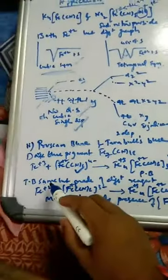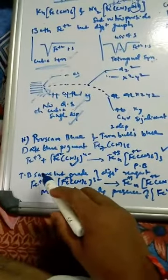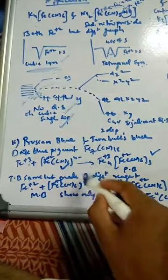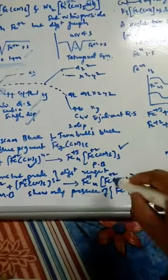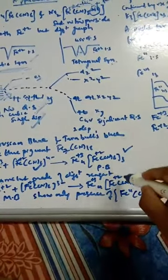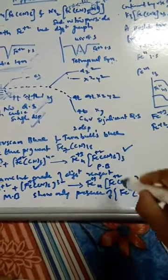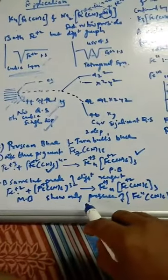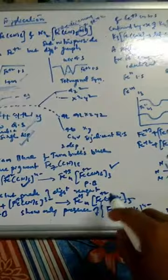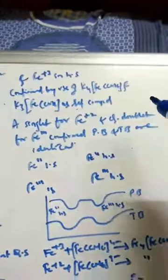Similarly, Turnbull's blue is prepared from an Fe2+ salt with ferricyanide [Fe(CN)6]3−, and the product you get is the same: Fe4[Fe(CN)6]3, also Fe3+ and Fe2+. So both are the same compound. Mössbauer spectroscopy shows only the presence of these iron species, so how can we differentiate them? They look almost the same.